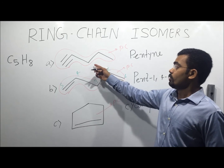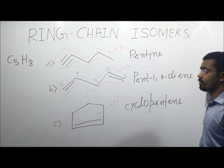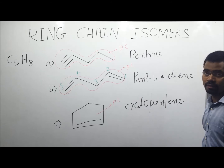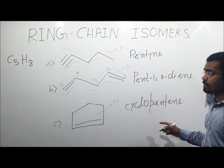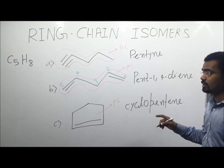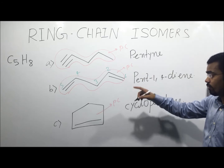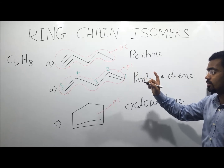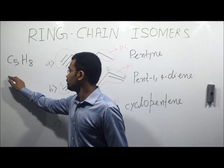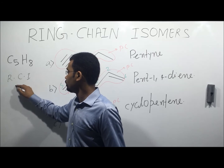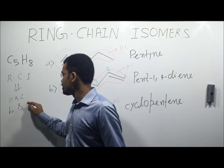Both A and B have an open chain as the parent chain, while C has a closed chain as the parent chain. Therefore A and B are not considered ring chain isomers with each other, while A and C, and B and C, are considered ring chain isomers because they have different cyclic natures of the parent chain. A is open chain, C is cyclic; B is open chain, C is cyclic.